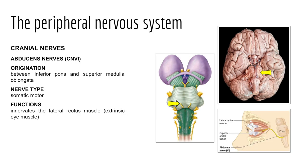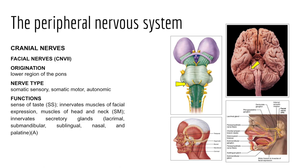Cranial nerve six is the abducens nerve, extending from the inferior pons and entering the orbit through the superior orbital fissure. It is primarily motor-based, innervating the lateral rectus muscle of the eyeball to control horizontal eye movement. This is the third cranial nerve responsible for innervation of the eyeball via skeletal muscle control.